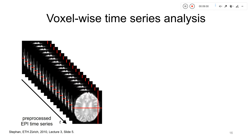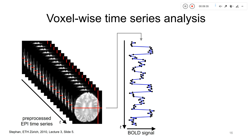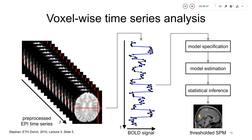Going back to our pre-processed dataset, consider a series of scans from a single functional MRI run. We highlight one voxel using a red crosshair — one of tens of thousands of measurement locations per scan. We extract data points from this particular voxel across all scans, giving us the temporal evolution of the BOLD signal over time. We then feed this signal into model specification, estimate parameters, and perform statistical inference.